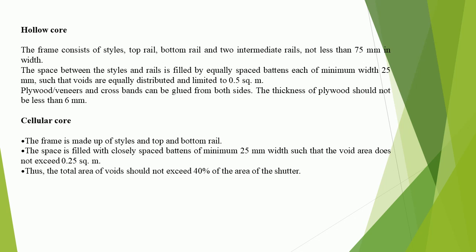Plywood, veneers, and cross bands can be glued from both sides; the thickness of plywood should not be less than 6 mm. Cellular core: the frame is made up of stiles and top and bottom rail. The space is filled with closely spaced batons of minimum 25 mm width such that the void area does not exceed 0.25 square meters. Thus, the total area of voids should not exceed 40% of the area of the shutter.